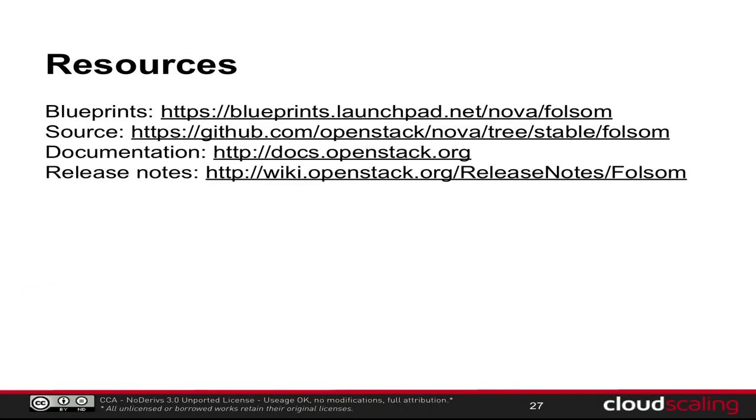Any other questions? I hope that wasn't too much information. My favorite config option is probably the reap one — if you get something in a strange state, you can fix it nicely. In many ways there are actually too many options, and one of the pushes in Grizzly is to categorize them: this is for tweaking, this is experimental, this is only for Xen, this is only for KVM, this is for RPC — so hopefully it'll get clearer about which options mean what.